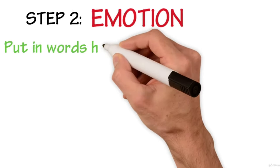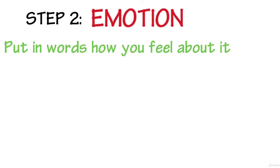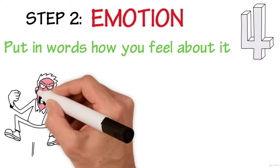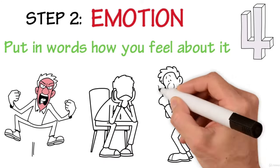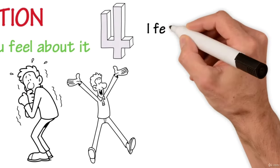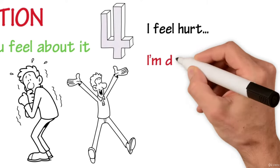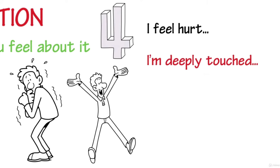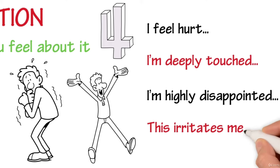Step two is the emotion. Put in words how you feel about it. In fact, there are only four basic emotions. Anger, sadness, fear and joy. All others can be seen as derived from those four. So use sentences such as, I feel hurt or I'm deeply touched or I'm very disappointed or this irritates me and so on.